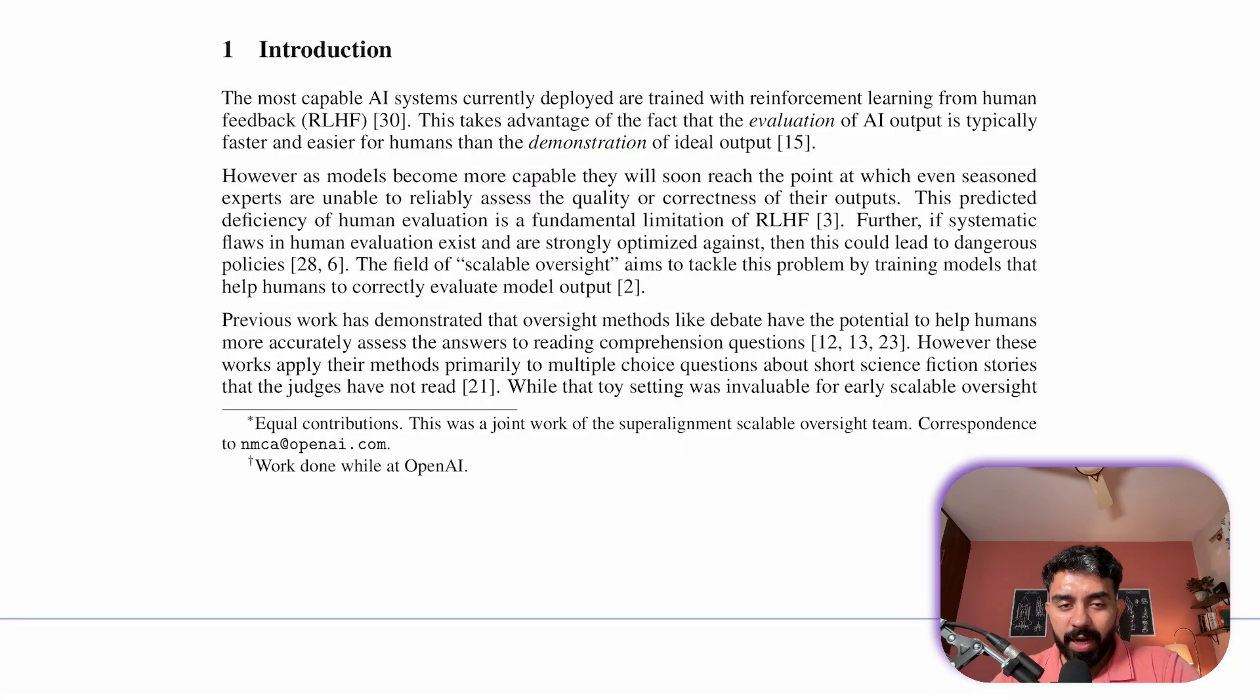So heading over to the introduction section, what makes the most capable AI systems effective today? We know that they are all trained with reinforcement learning from human feedback, RLHF. Now this method leverages the fact that evaluating AI output is usually faster and easier for humans than demonstrating the perfect output themselves.